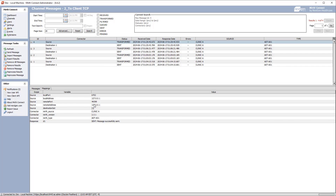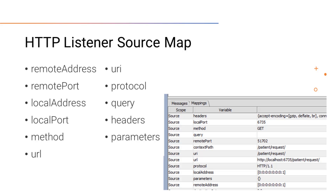Next we have the HTTP listener. The HTTP listener stores the remote address, remote port, local address, local port, and then the method — so GET, POST, PUT, or any other HTTP methods — the URL which is the URL the message was sent over, the URI which is everything in the endpoint except for the domain name and port, the protocol used to query the endpoint, the query which is any query parameters used while making the API call as a string, the context path which is the path after the domain name and port but before query parameters, the headers, and parameters as an object so we can pull them out more easily.